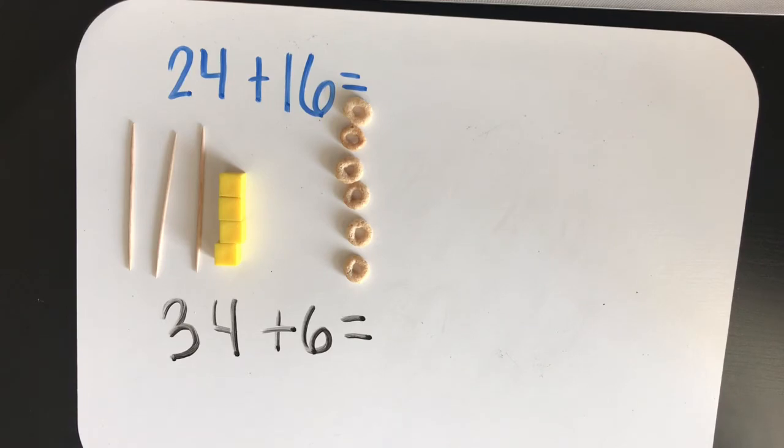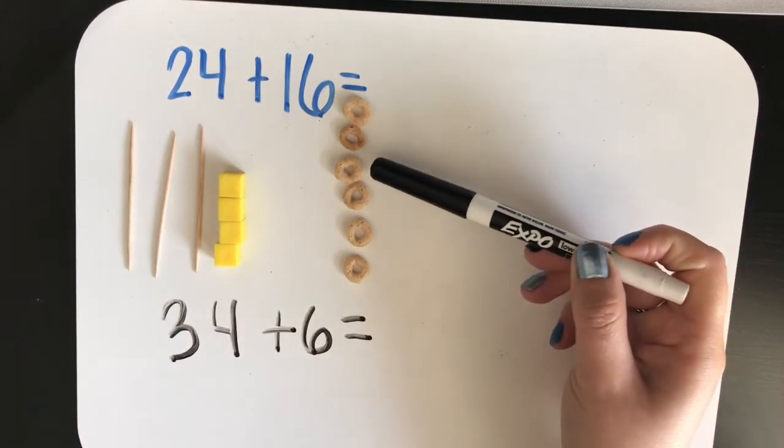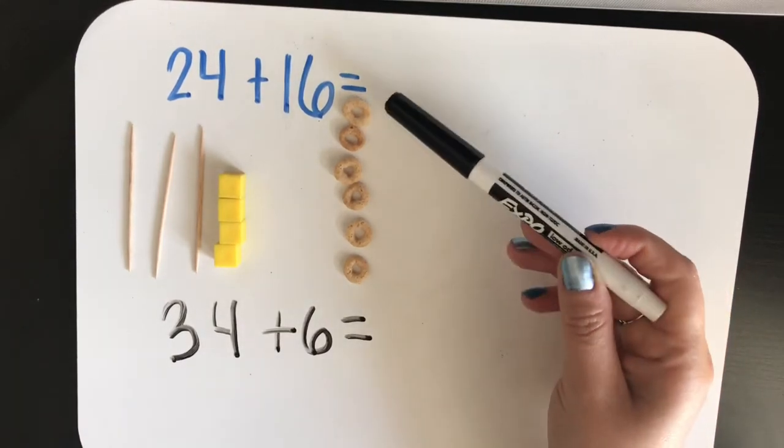we could always count on thirty-four, thirty-five, thirty-six, thirty-seven, thirty-eight, thirty-nine, forty.